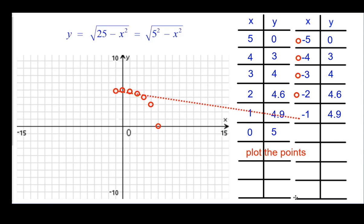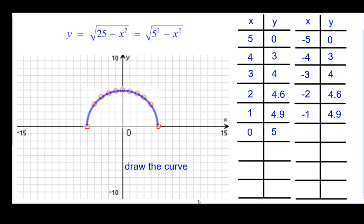At negative 1, again, we're at the 4.9. Negative 2, we got the 4.6. Negative 3, negative 4, and negative 5. And you can see we've got symmetry here about the y-axis. So drawing the curve does definitely look like half of a circle, a semicircle.